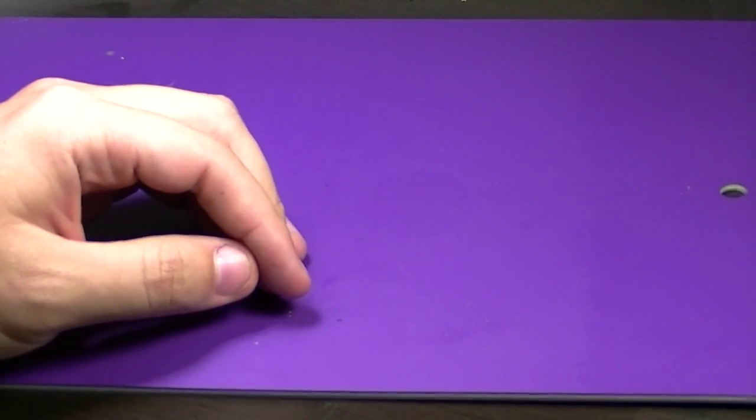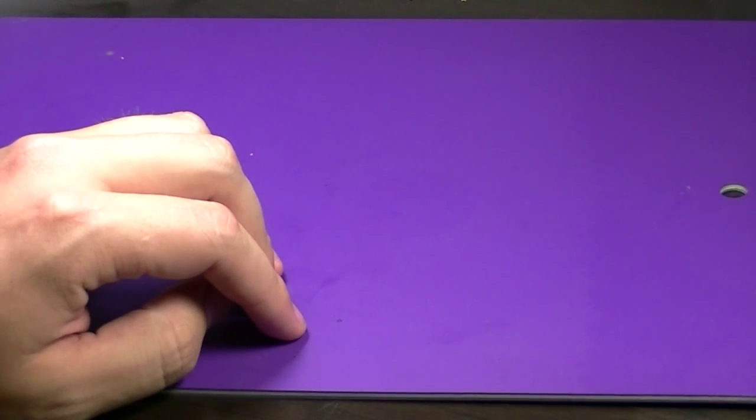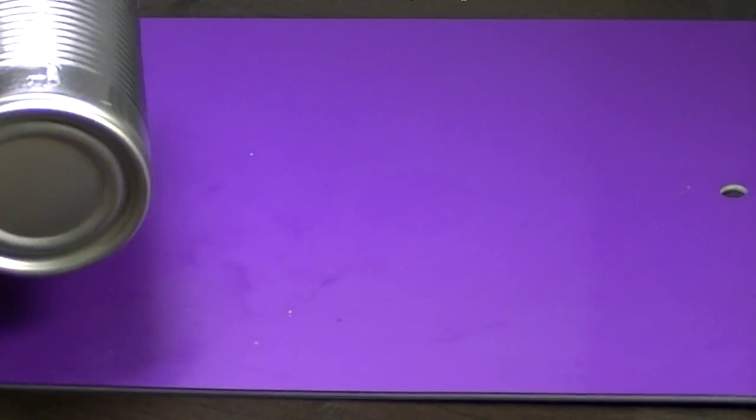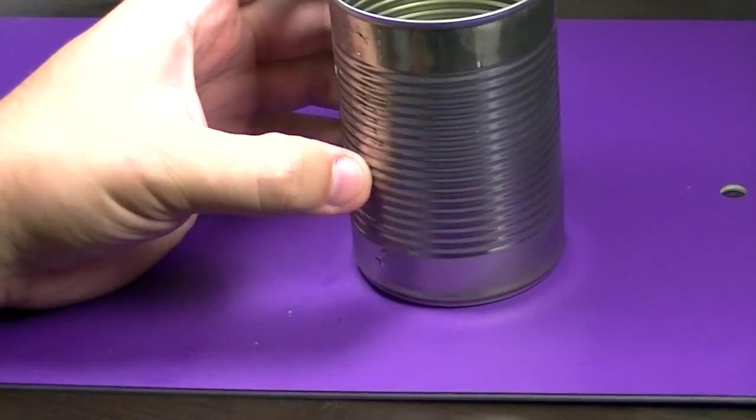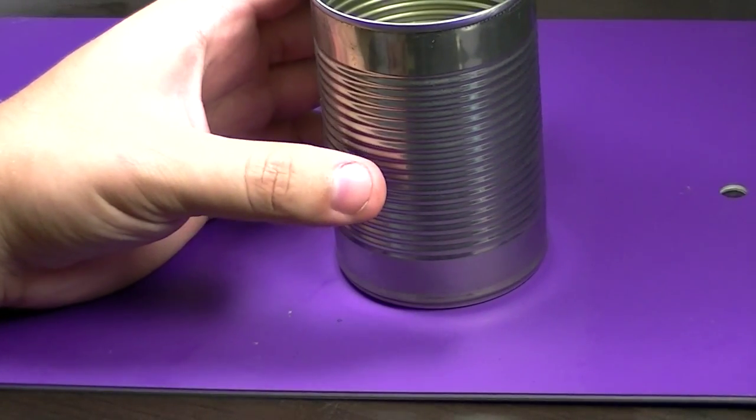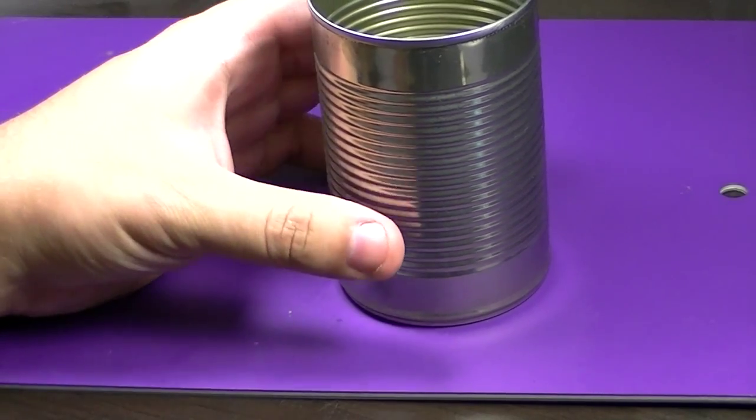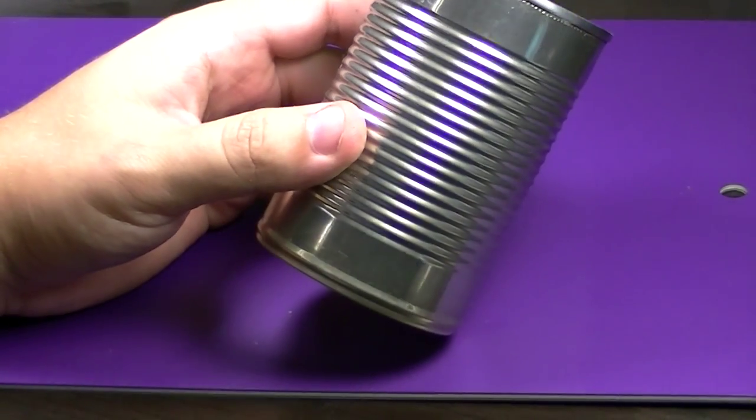Hey guys, Dave from Wolfired Hobbying here. Today we're going to take a look at building another terrain piece. This is going to be a western themed water tower and we're going to make it with an old soup can. This is going to be for my Malifaux table obviously with the western theme, but you could use this terrain piece for anything you want.